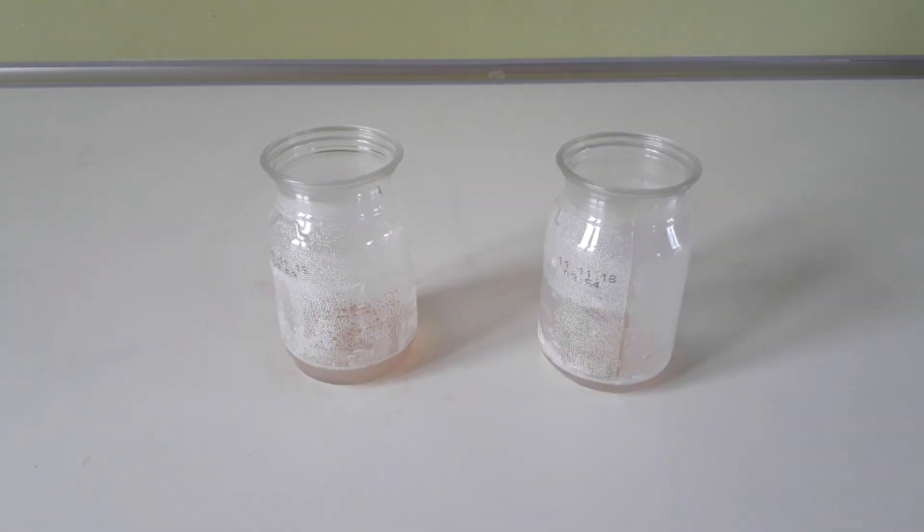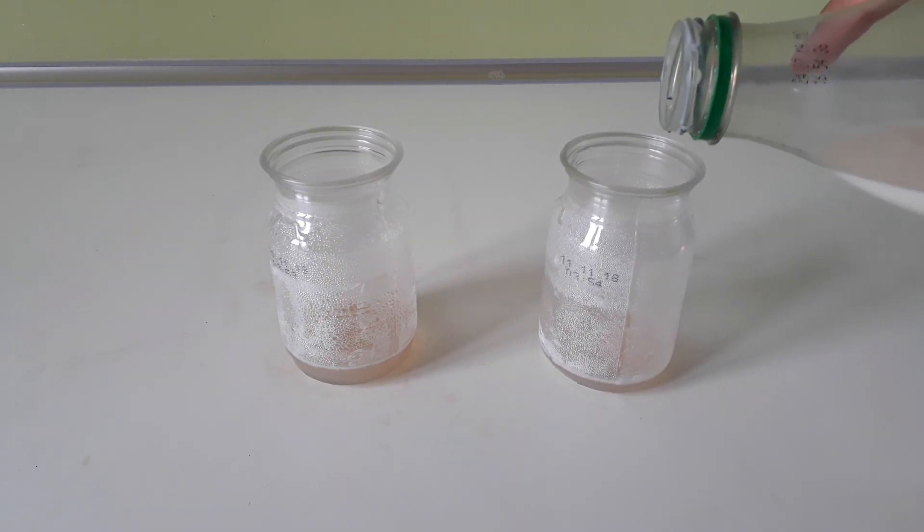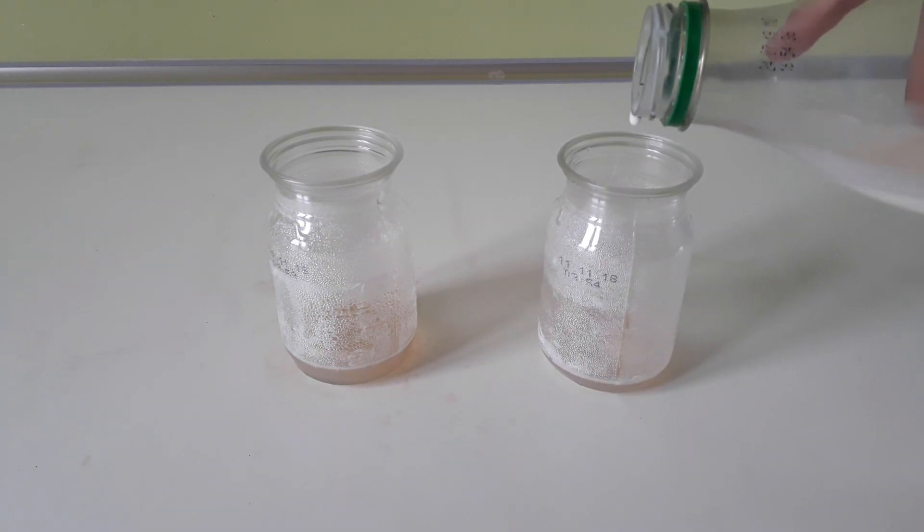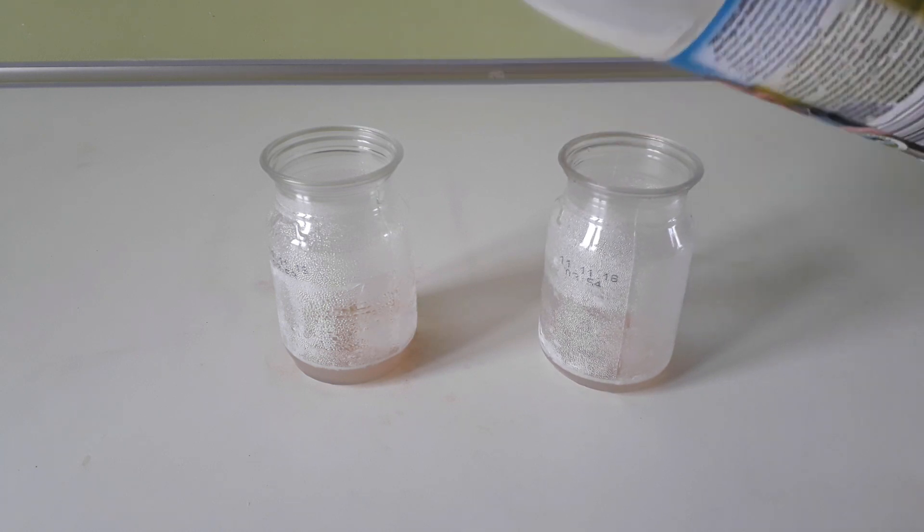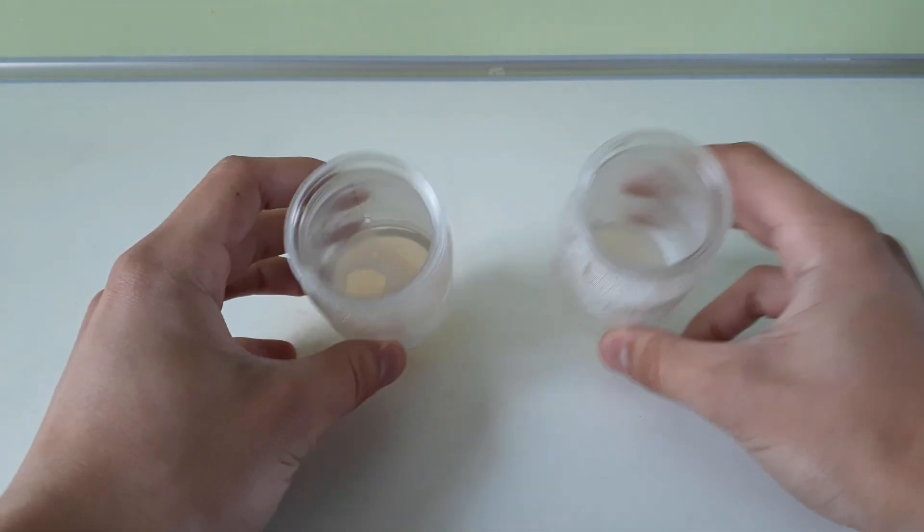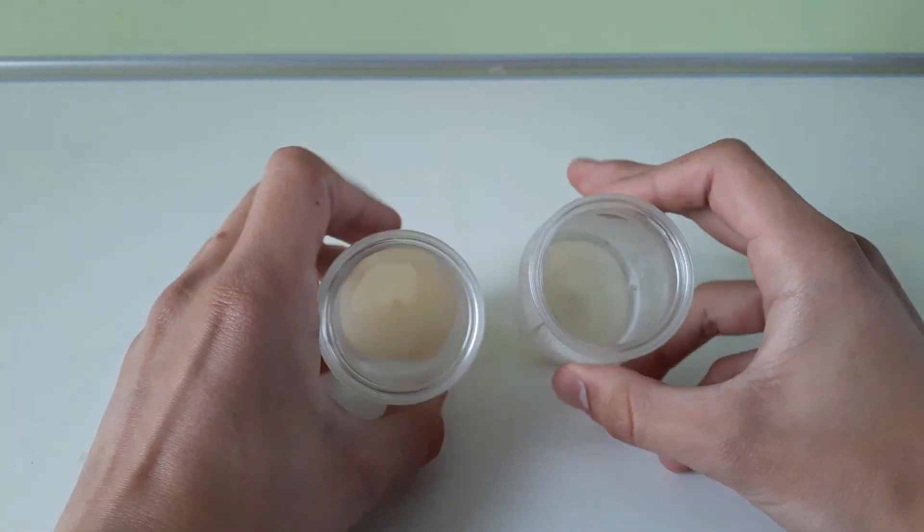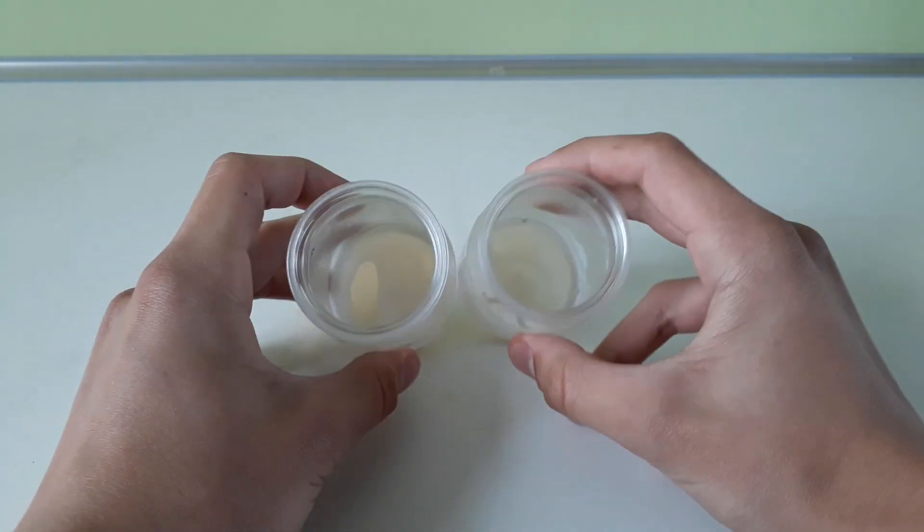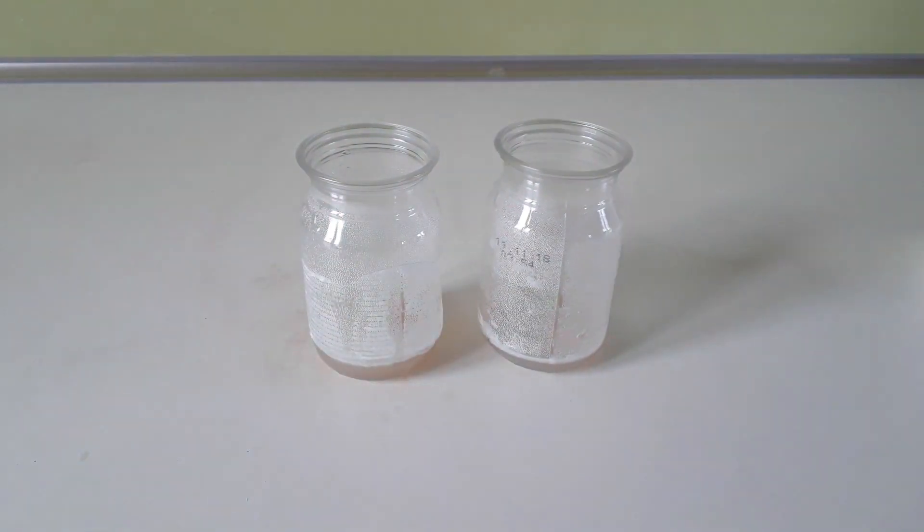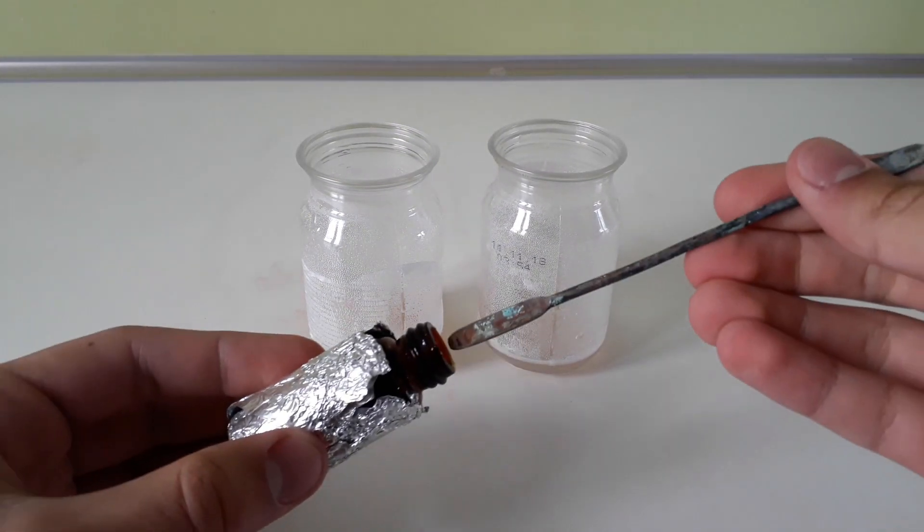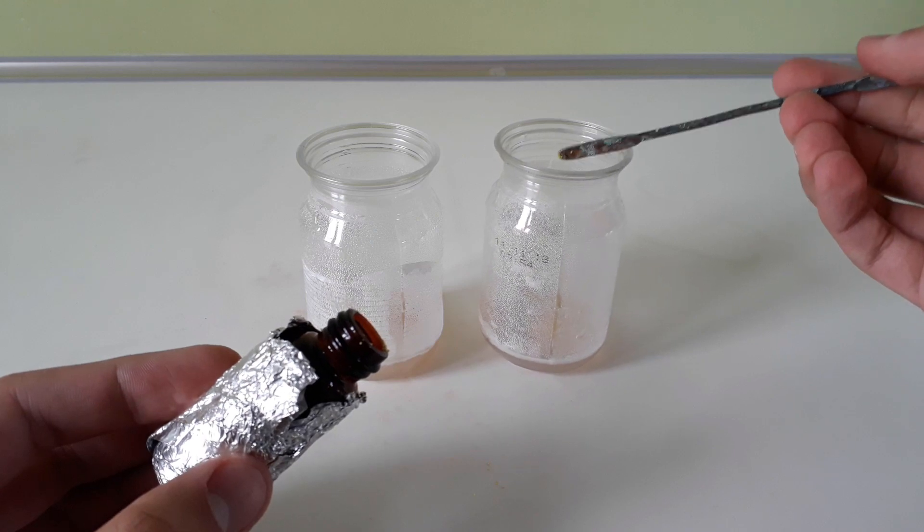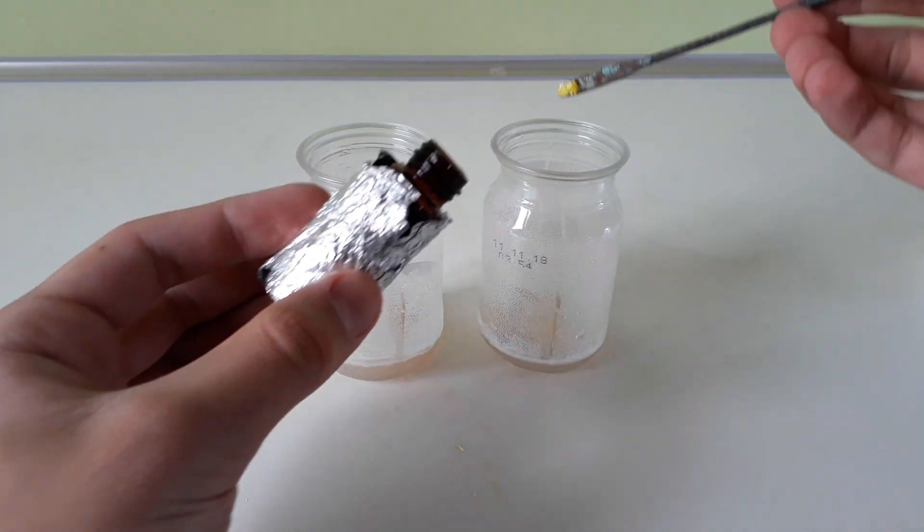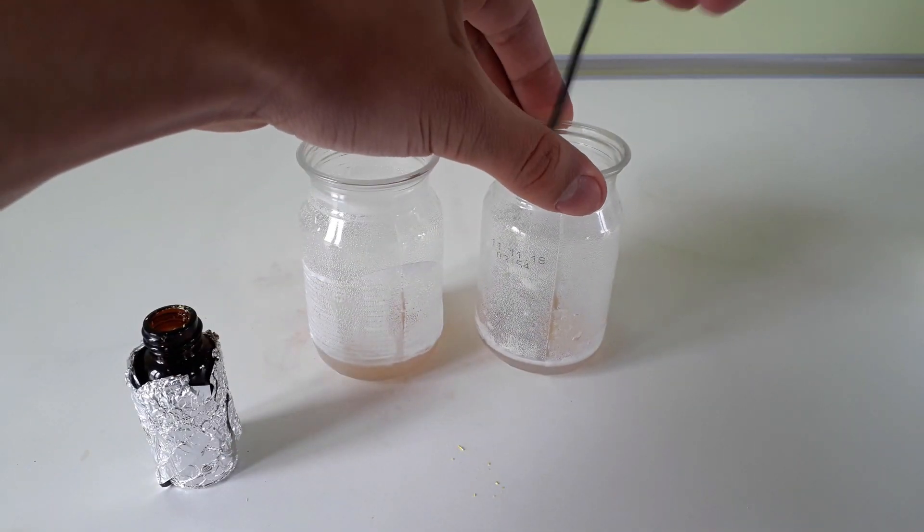After the agar water had solidified, I added a couple drops of milk into both of the cups. The left cup is the control cup and into the right cup I add the iodoform. I put the cups in a dark place and wait for about two weeks.